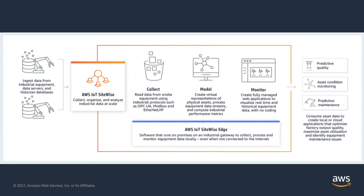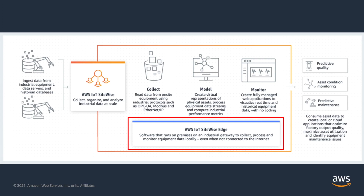AWS IoT SiteWise is an AWS service for industrial customers that delivers an organised view of live and historical operational insights. You can use it to collect, organise, analyse and visualise data. SiteWise Edge is the edge component of the service. It runs at the edge to collect data from machines on the factory floor, then aggregates and processes it locally before sending it to the cloud.